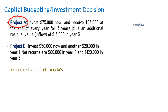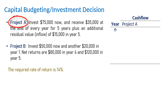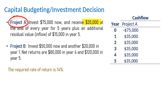Project A requires an immediate investment of $75,000 and returns of $35,000 for 5 years. But in the 5th year, there is an additional inflow of $15,000, making it $50,000 in Year 5.